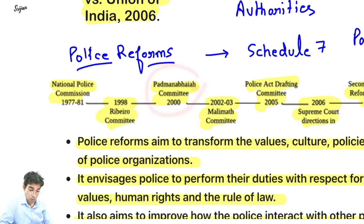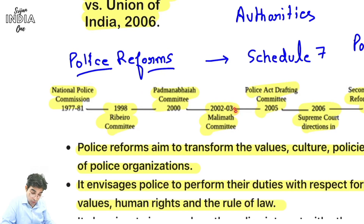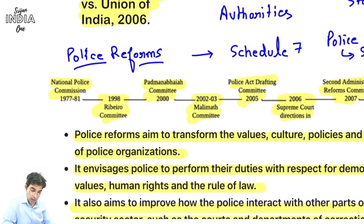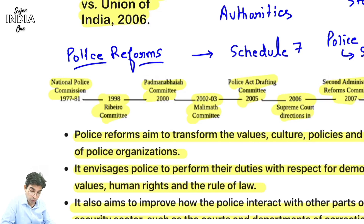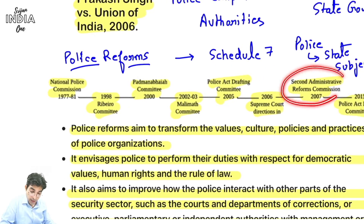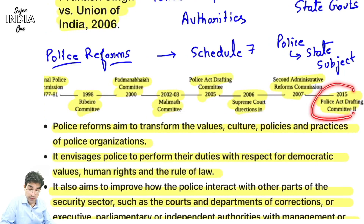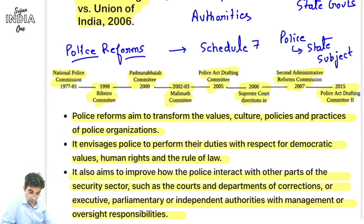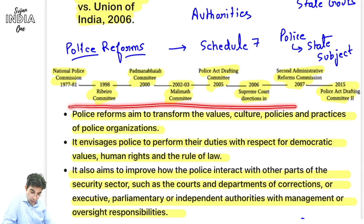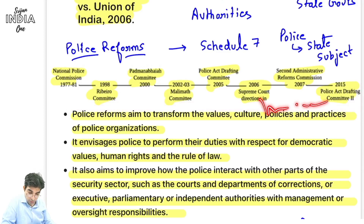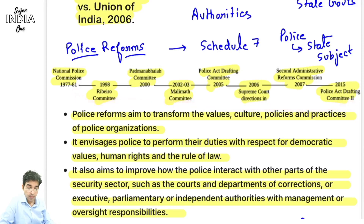Yeh in line hai Prakash Singh vs Union of India - Supreme Court ka judgment tha 2006 mein - ki police complaint authorities banao. Police reforms pehle bhi koshish ki gayi hai: ek hai National Police Commission (1977-81), Riberio Committee 1998 mein aayi thi, Padmanabhaiah Committee 2000 mein aayi thi, 2003 mein Malimath Committee. Just know the names - answer mein likhne mein kaam aayega. Jo committees ki recommendations hoti hain wo bahut zyada vary nahi karti - more or less common points bhi hote hain.